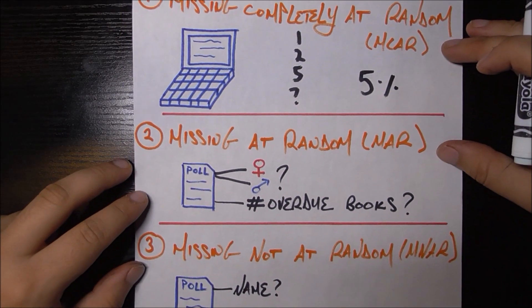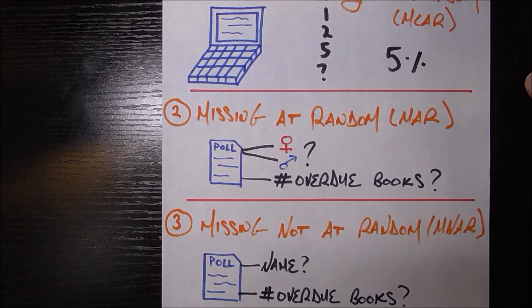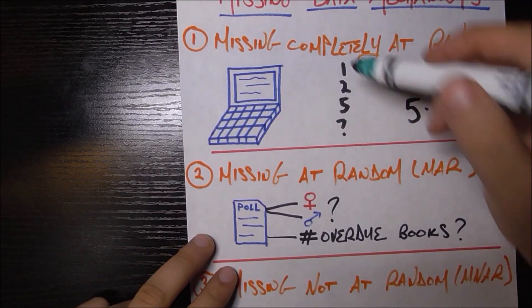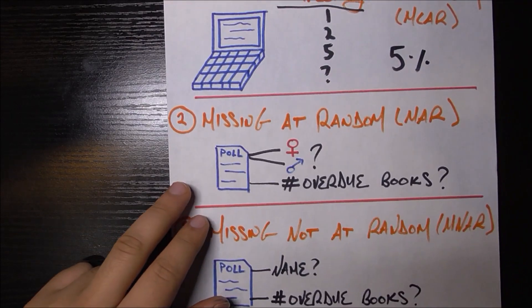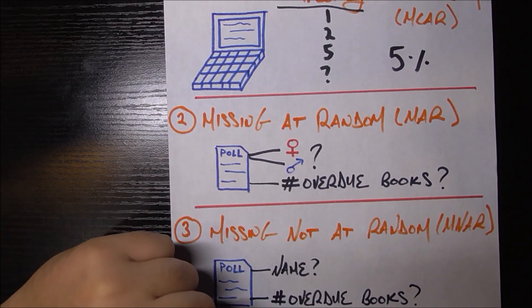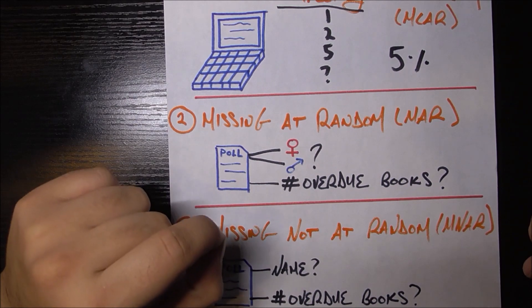Now getting to a little bit more complicated case, we have this missing at random, often abbreviated as MAR. So I have a bit of an issue with the name here because it's almost identical to the name here except for this word completely. But let me first explain what it is. In missing at random, the data is missing at a certain rate, but that rate depends on some other variable in the data.